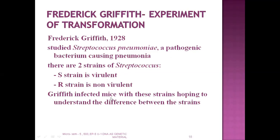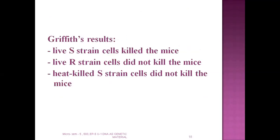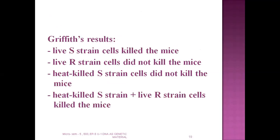Virulent means having the power to cause disease. Griffith infected mice with these two strains. He found that the live smooth strain — which had a polysaccharide layer on the outside — killed the mice, while the rough strain did not kill the mice, because it had no outer layer.